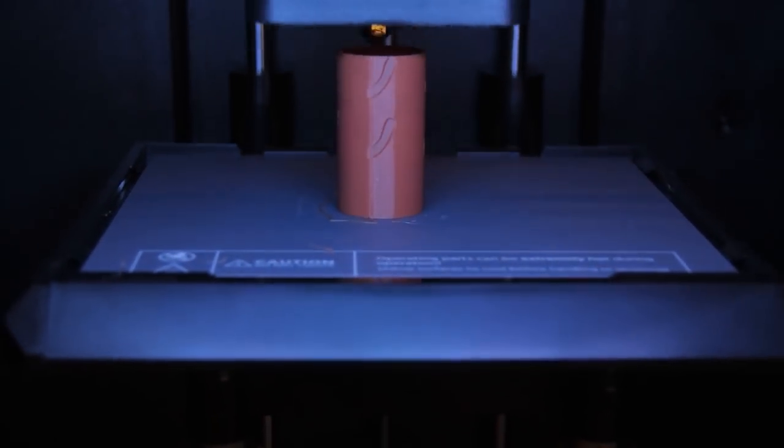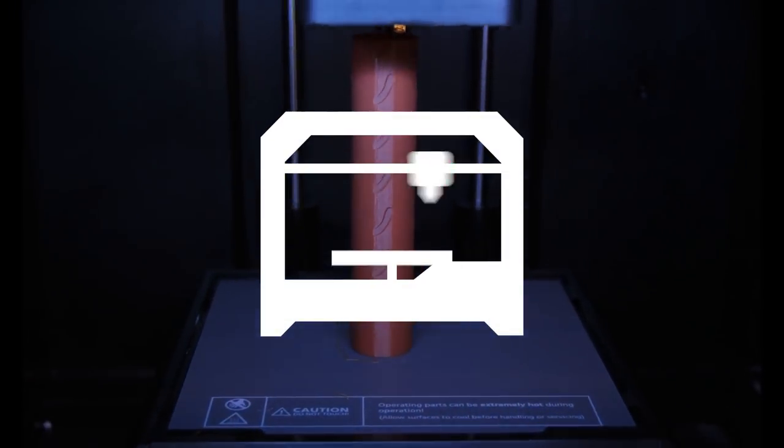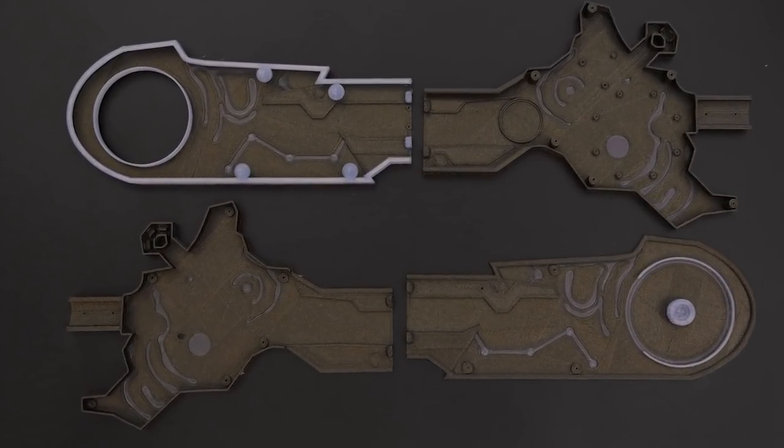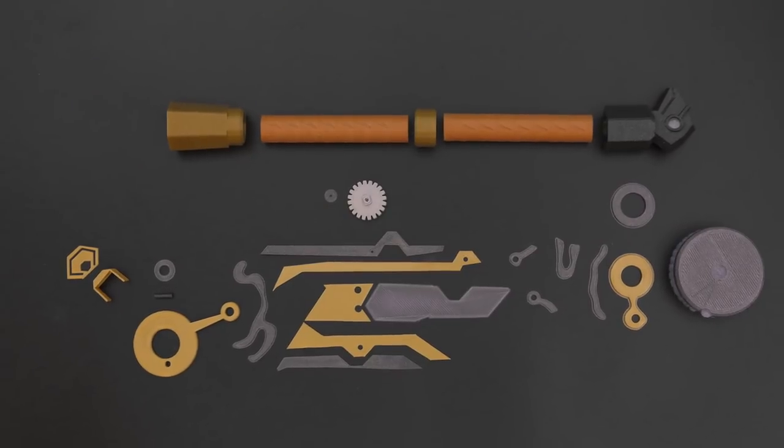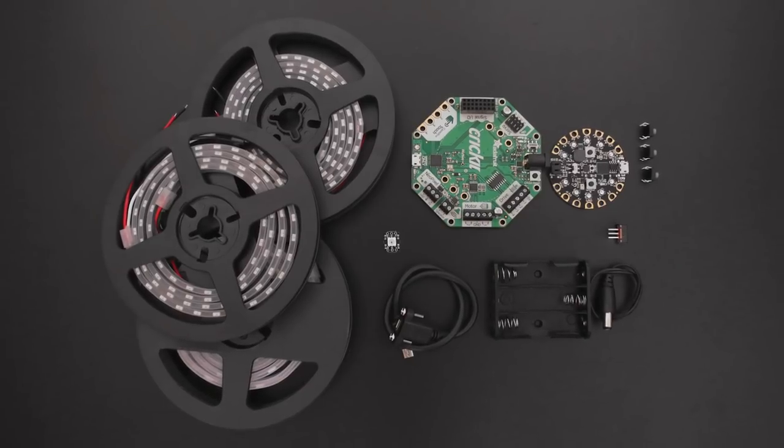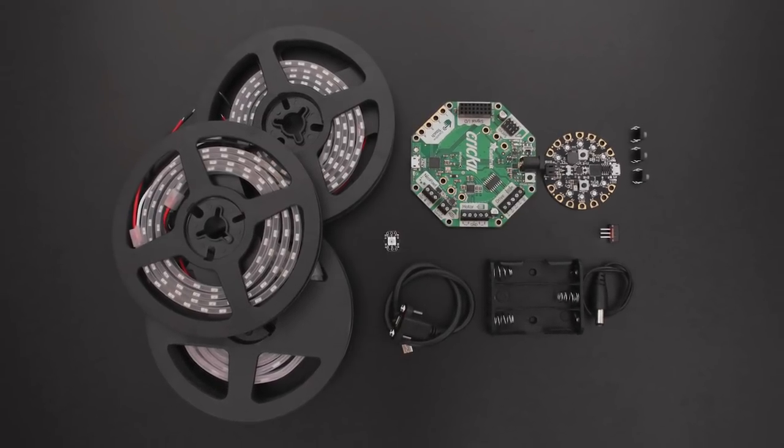We used NinjaFlex to create a flexible sleeve for the handle. The design files are free to download and the source file is open for remixing. We used glitter infused filament to give the parts a bit of texture. You can get a full list of parts to build this project, links are in the description.